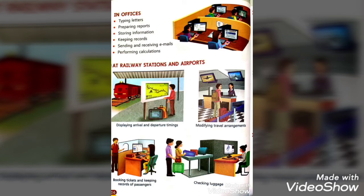The fifth place where we use computers is in offices. The first use is typing letters — computer ke keyboard mein letters A, B, C, D, numbers 0 to 9, and all symbols like full stop and question mark hote hain. Using the keyboard, hum letters, numbers, aur symbols type kar sakte hain. The second use is preparing reports — just as reports are made in hospitals, banks, and shops, reports are also prepared in offices using computers.